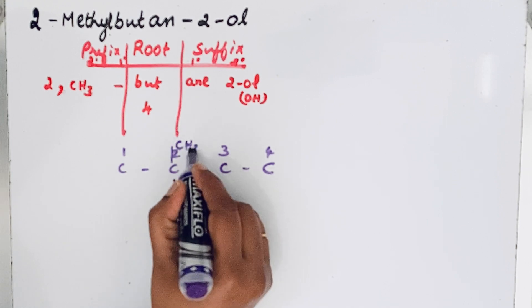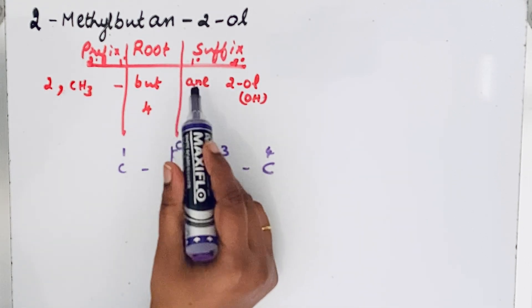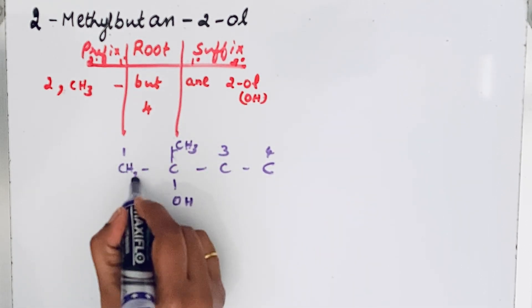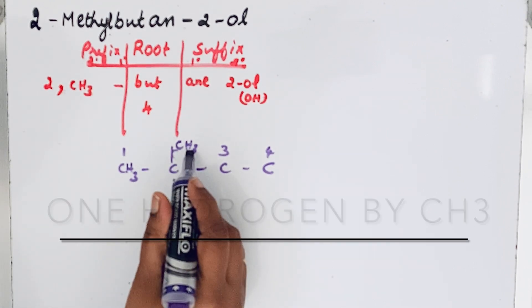Remaining all other carbons, we can attach hydrogen because this is an alkane with only single bonds. So the first carbon CH3, here in the second carbon, one hydrogen is replaced by methyl group, then another hydrogen is replaced by OH group.